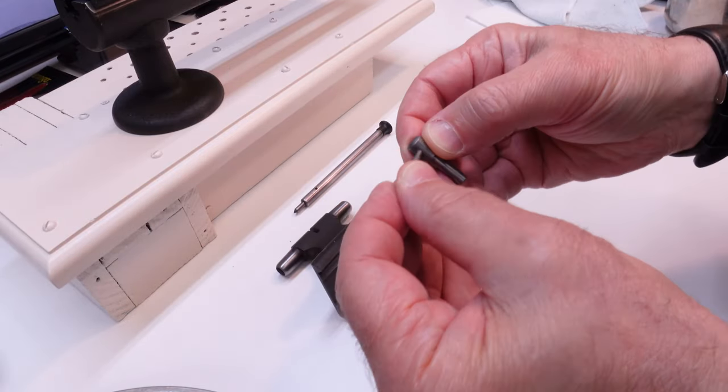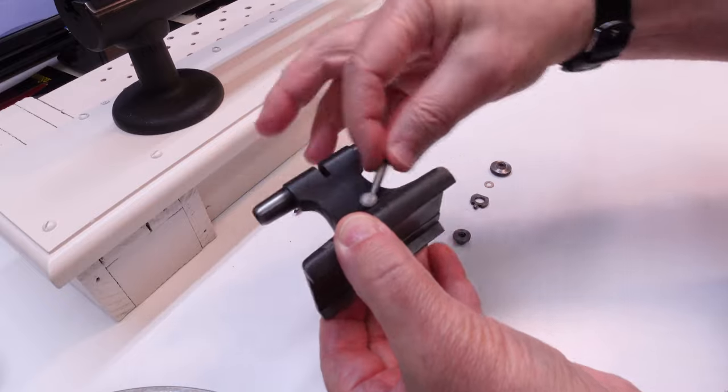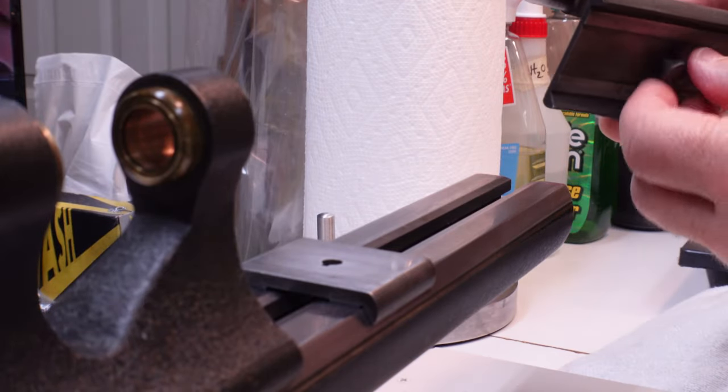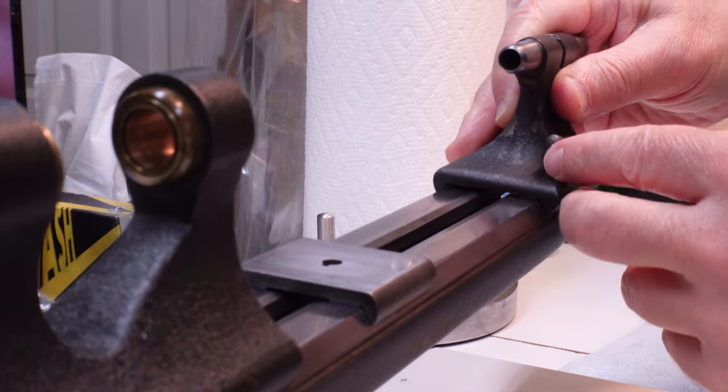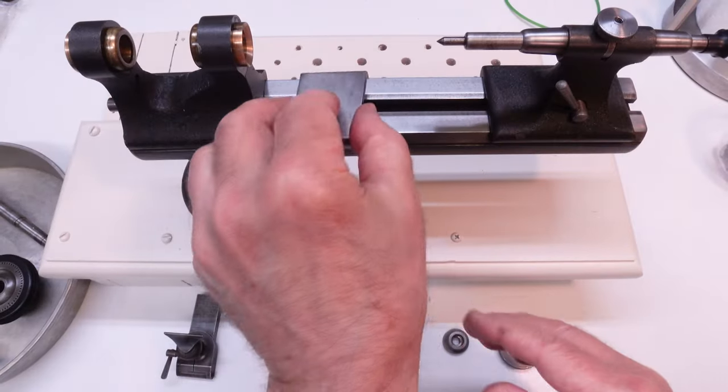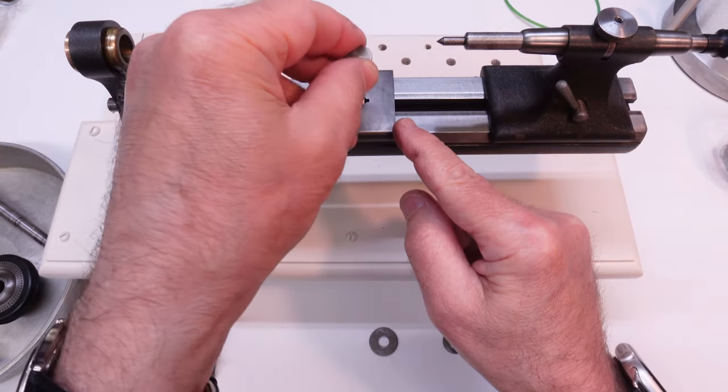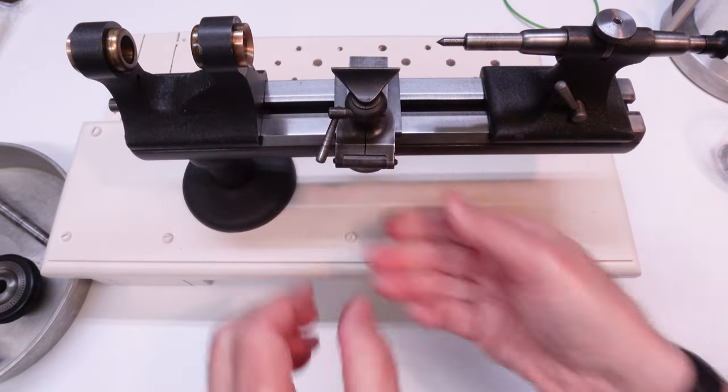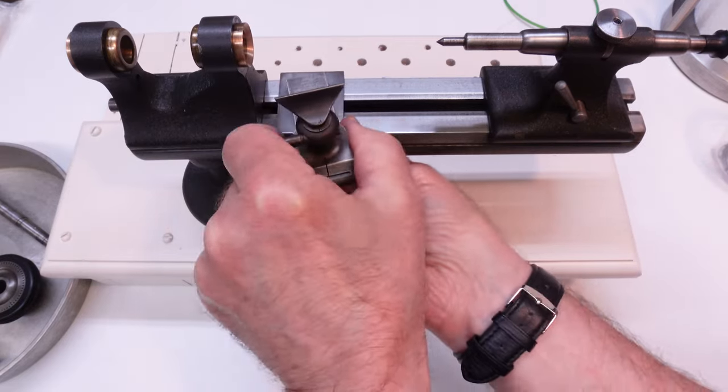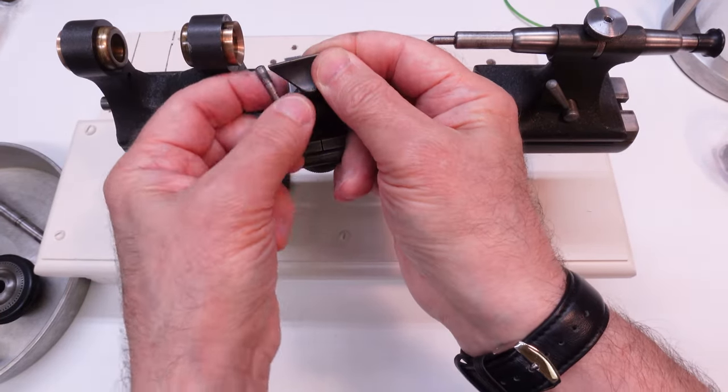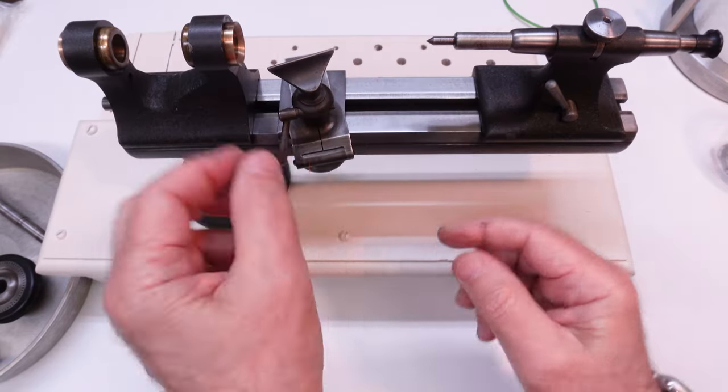Let's get the tailstock reassembled. Here, I'm adjusting the screw on the bottom of the tailstock so it locks securely on the bed. Next, I'm reinstalling and adjusting the tool rest so it moves freely and locks in place easily. I'm also making sure that all of the height and rotation adjustments are easy to move and lock in place as well.